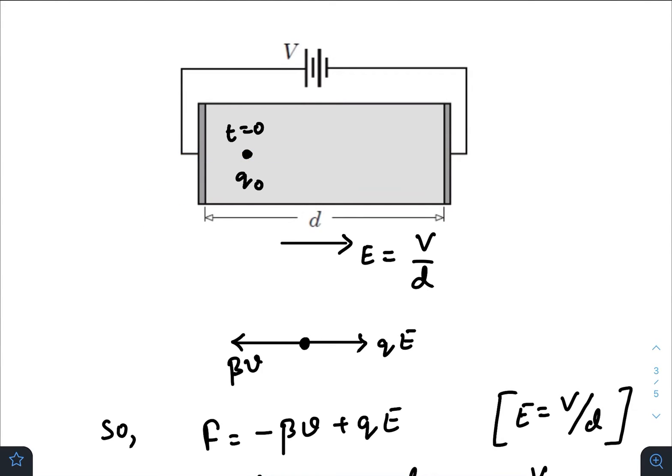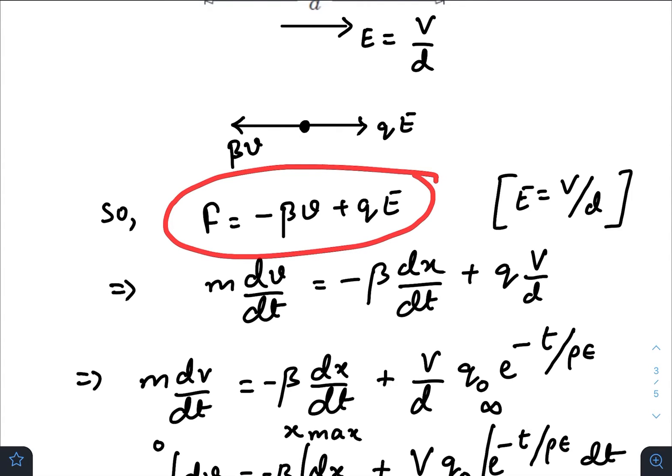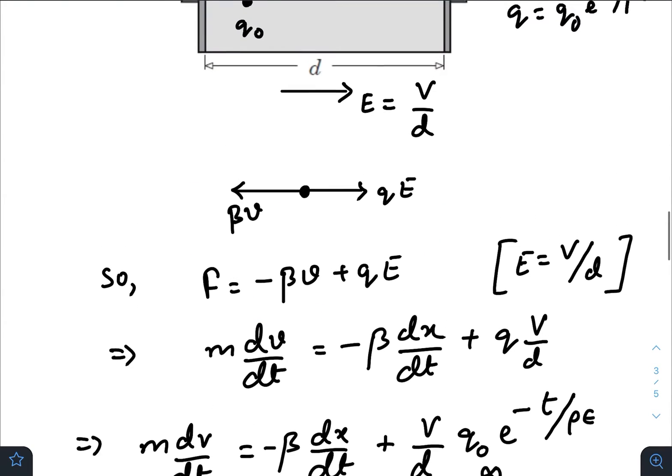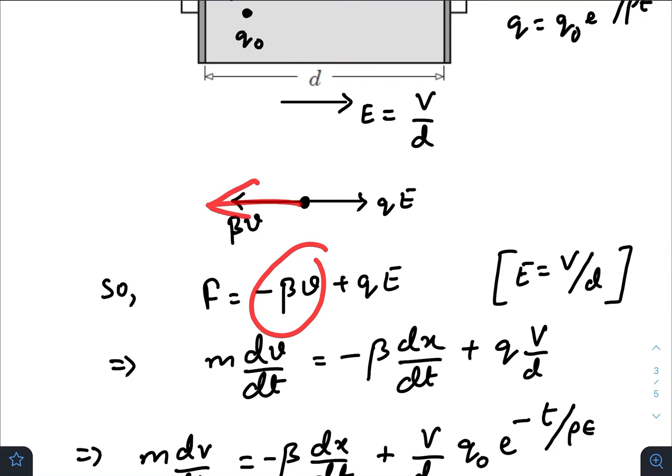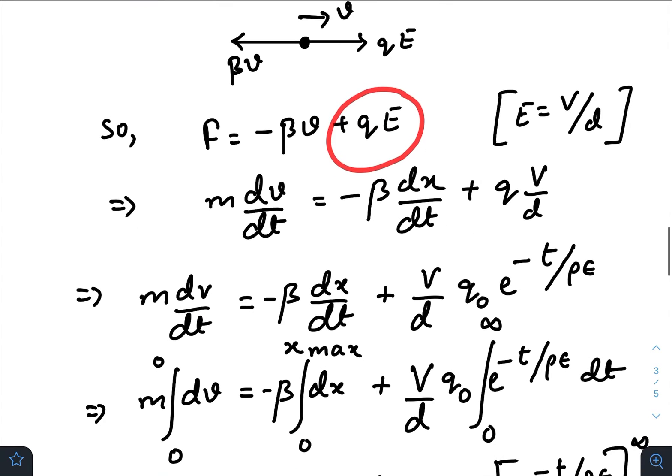Also, as time increases, the value of q₀ is also decreasing following this formula: q₀ e to the power minus t divided by ρε. So at any instant, the force acting on the charge would look like this: minus βv because it is moving in the opposite direction, plus qE.